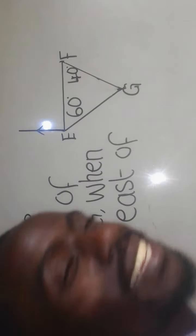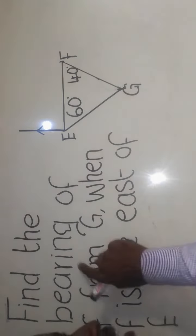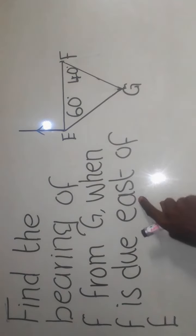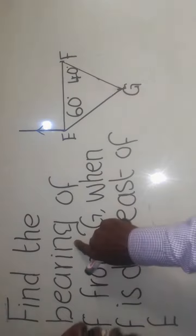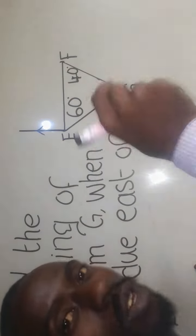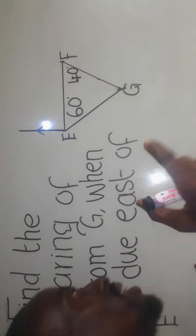We have a mathematics question that says find the bearing of F from G when F is due east of E. When they say bearing, it simply means an angle measured from the north. The keyword here is watching from here.